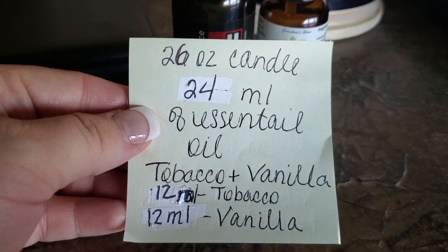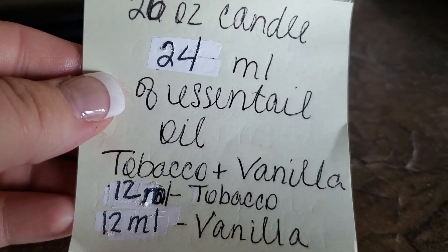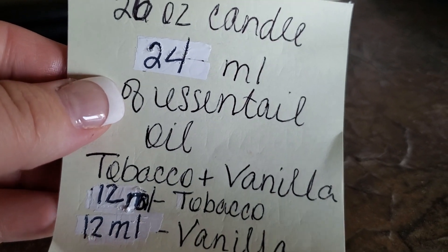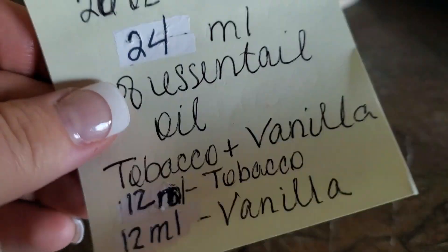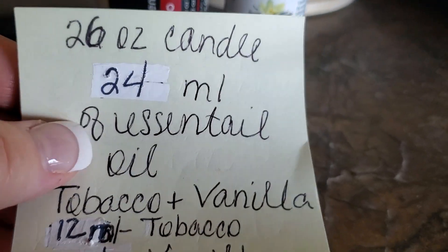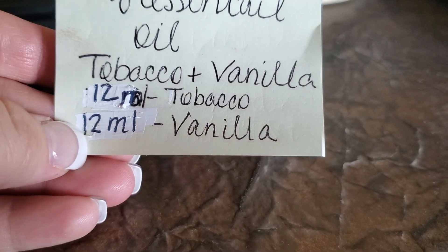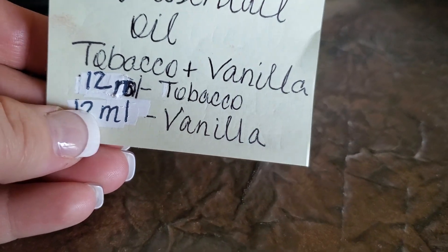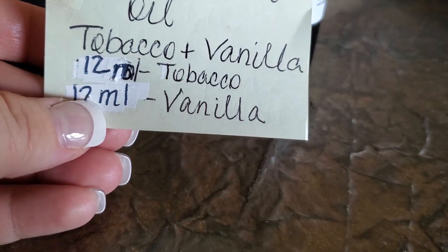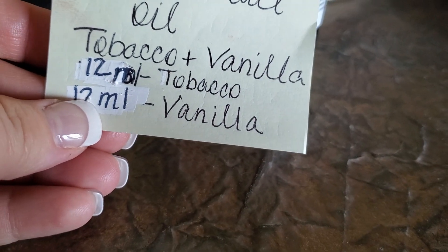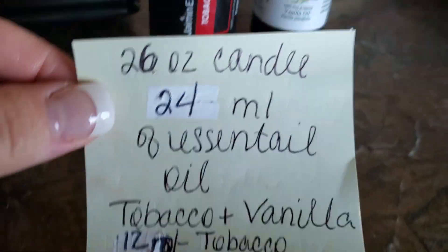So if you have a 26 ounce candle, you would use 24 mls, and you can use 24 mls of anything — you just want whatever essential oils you add in there to add up to 24 mls. Say I wanted it to be more vanilla than tobacco: I could do 8 mls of tobacco and 16 mls of vanilla. You just want your essential oils to add up to 24.